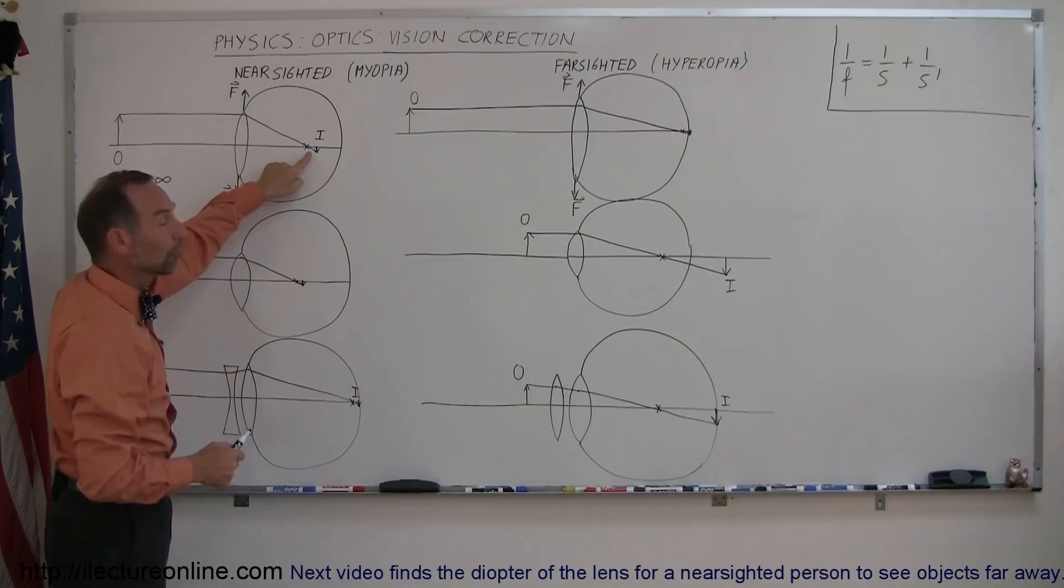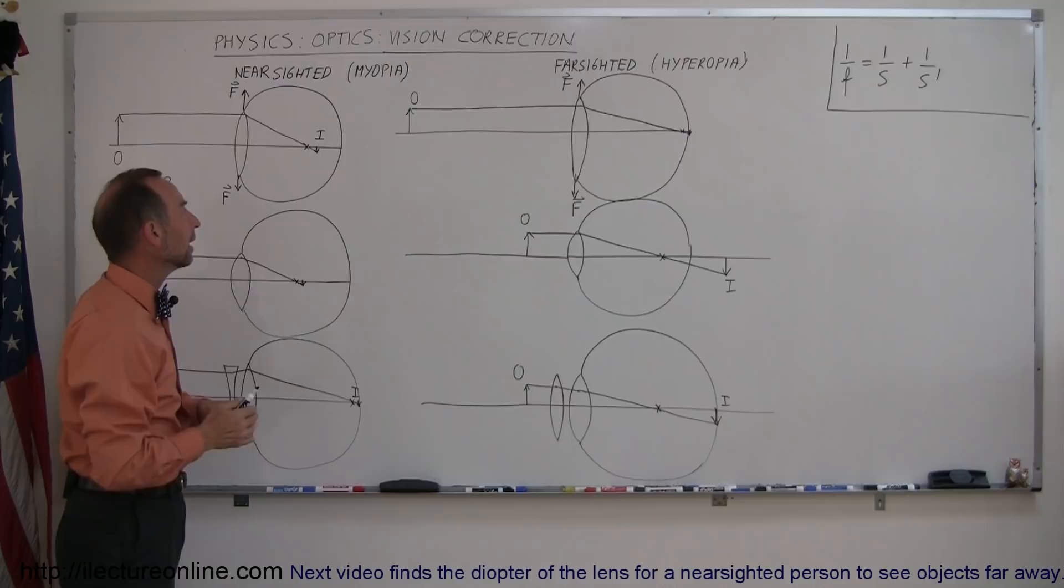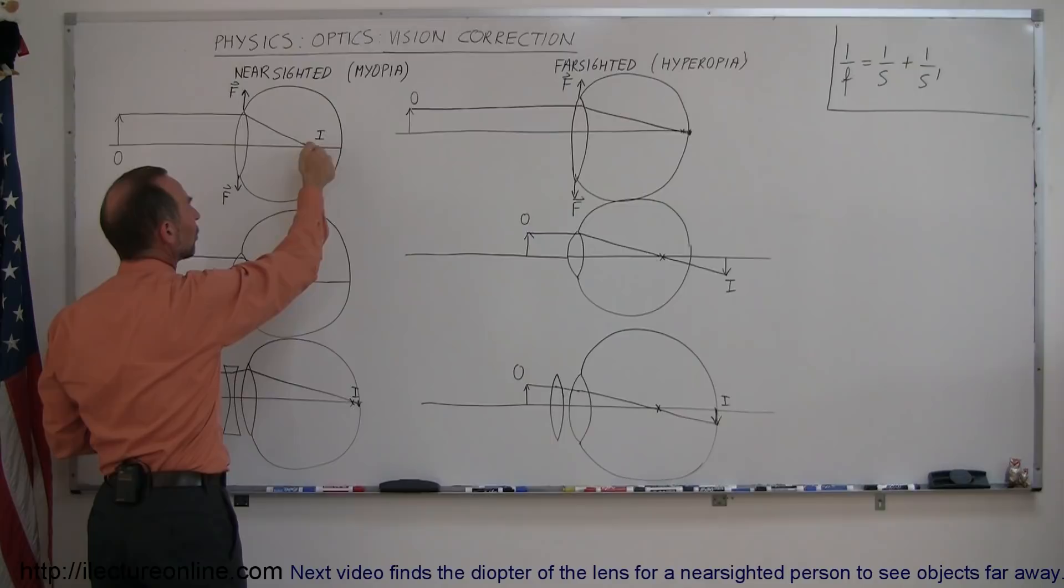And if the focal point can be put near the back of the eye, where the retina is, then the image will not form on the retina, it will form before the retina, and so the rays that then reach the retina will not be very focused and the image will look fuzzy.